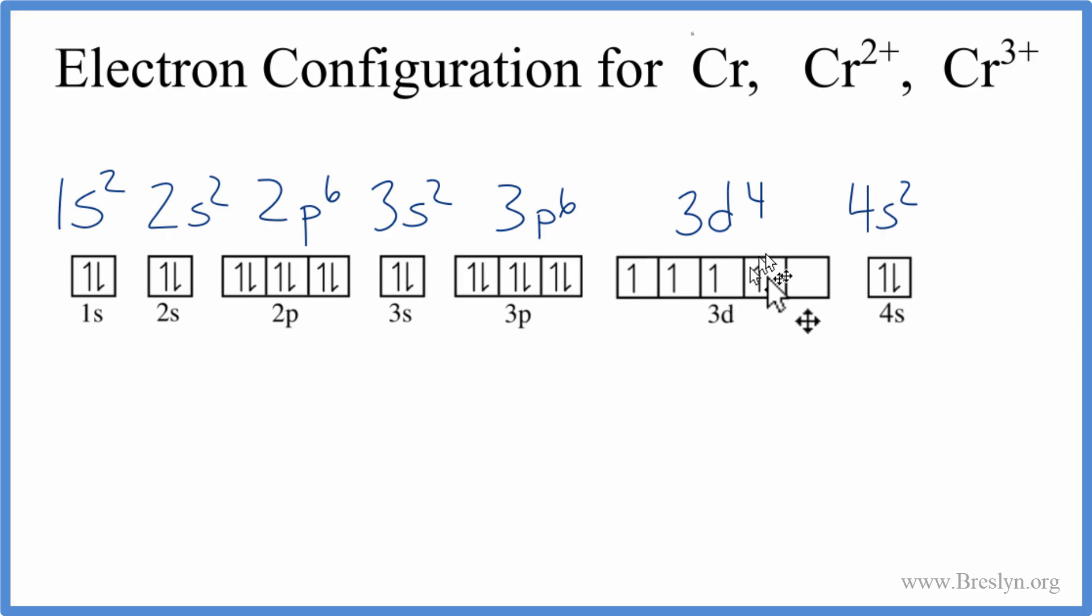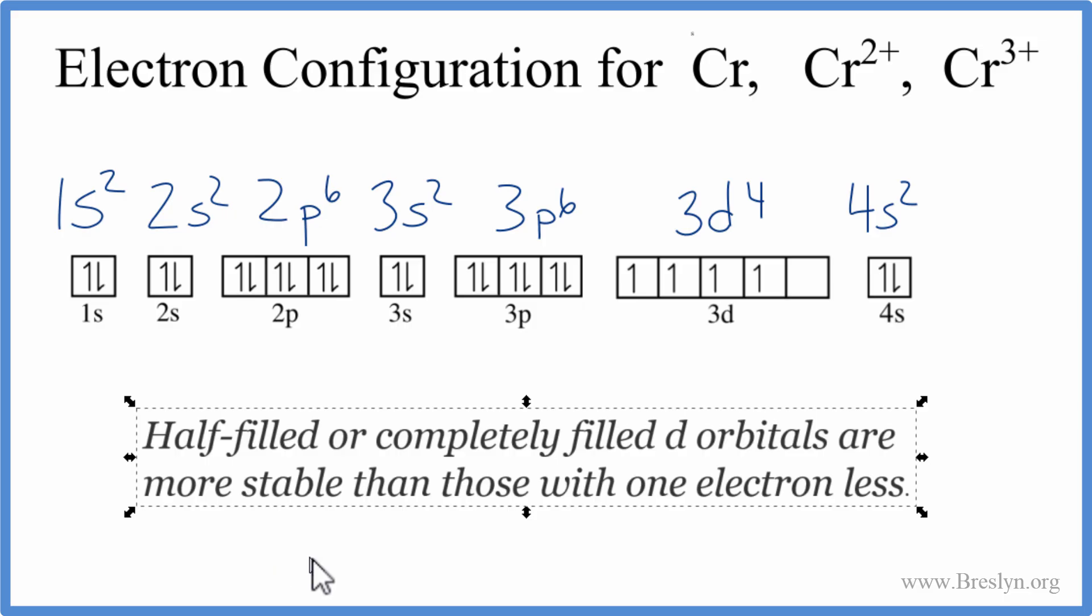We have 1, 2, 3, 4 broken up like this. So a rule we can follow here is that half-filled or completely filled d orbitals are more stable than those that have one electron less. So here we have almost half filled. If we could put one more in here, this would be half full. That would be very stable.